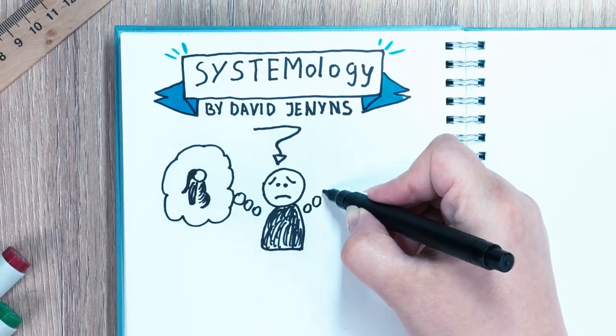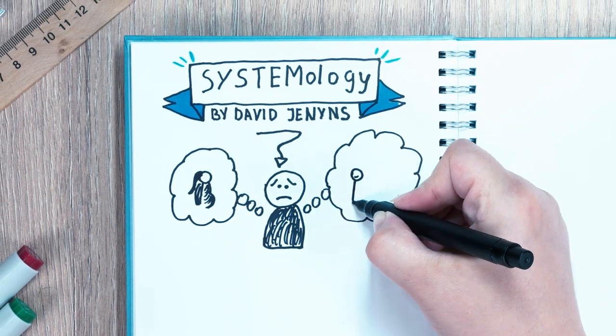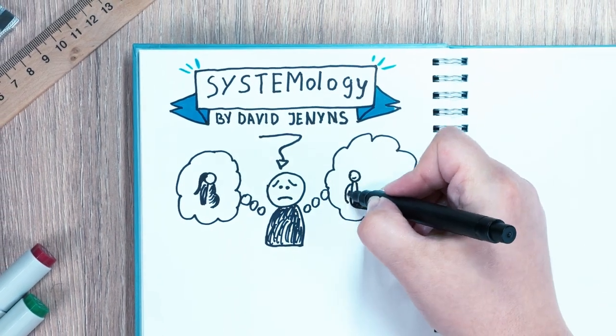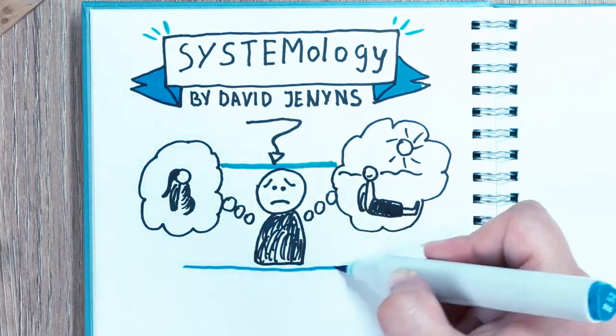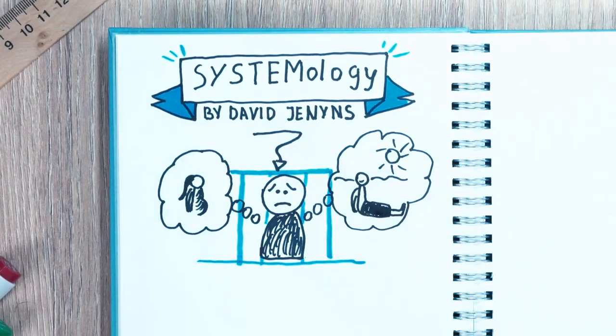Jennings shares his own story and how his breakthrough came shortly after discovering his wife was pregnant. Feeling trapped in his digital agency, he realized he didn't want to be a workaholic dad and he knew things needed to change.